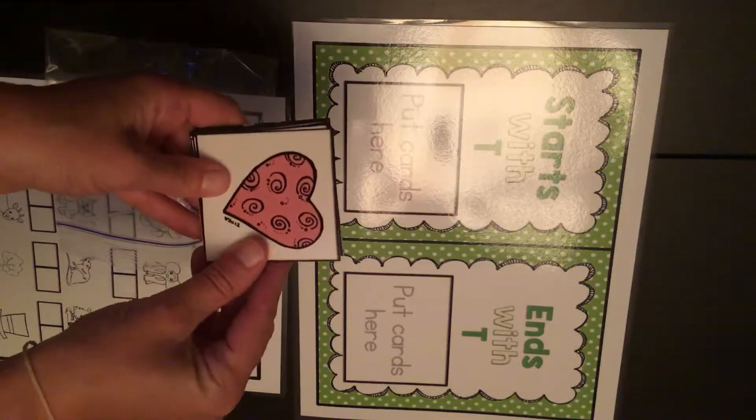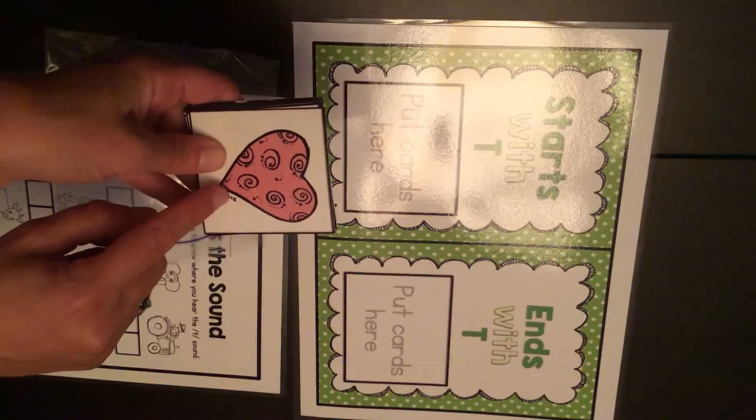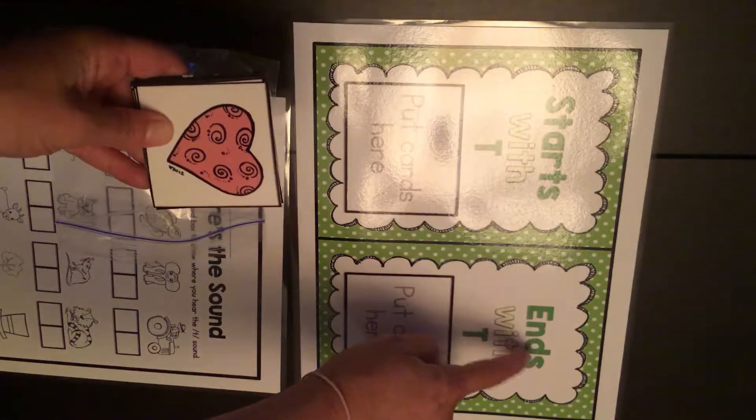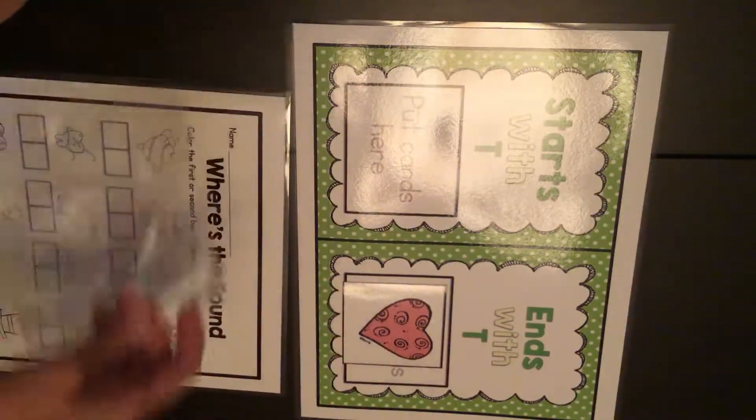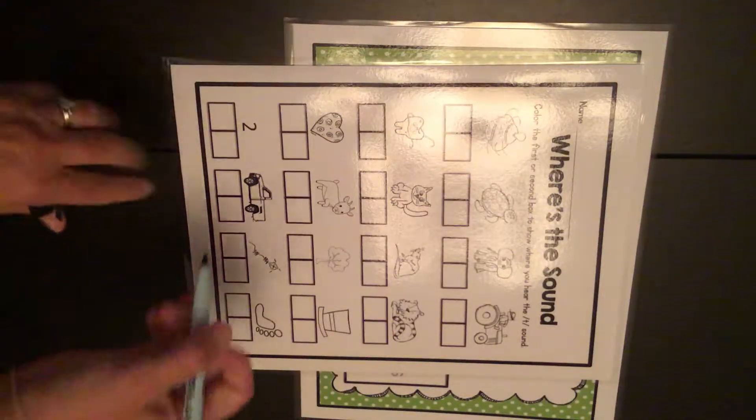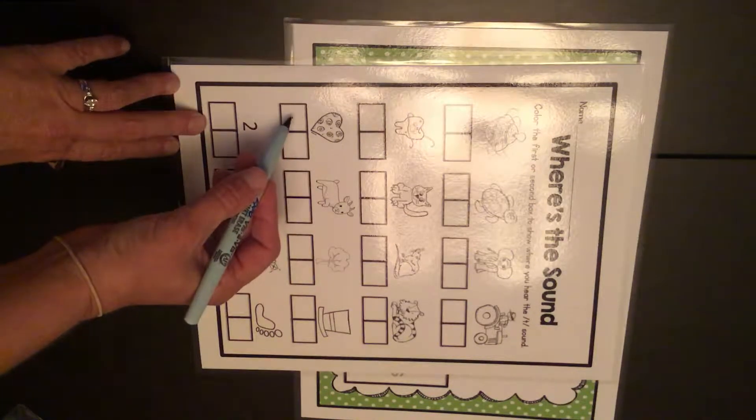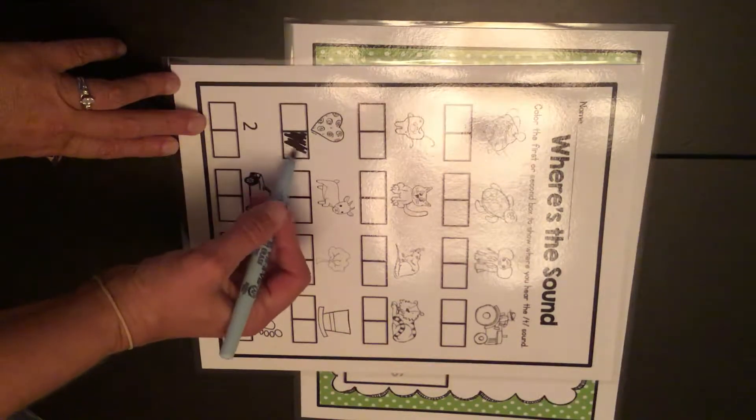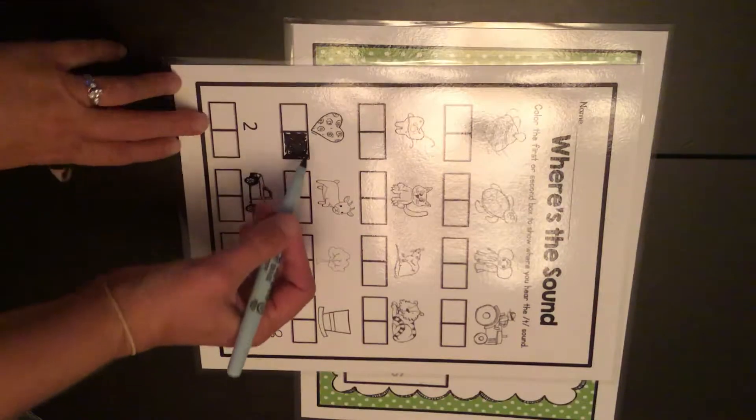Here I have a picture of a heart. Heart. I hear that sound at the end. Heart. I'm going to put it here. Then on my page I find the heart right here and the T sound was not in the beginning. It was at the end. So I'm going to color in the second box because it was at the end of the word.